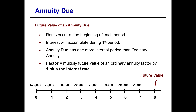You can see this on the timeline. Notice we're looking for the future value of this annuity due. We are making our payments or investments at the beginning of each period. Therefore we will have interest in that first period, and there will not be a payment at the end of the last period, because that would be an ordinary annuity.